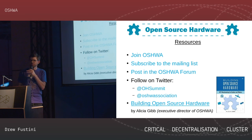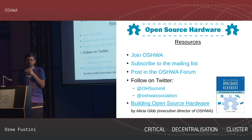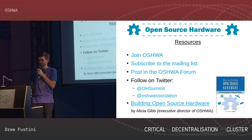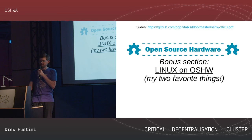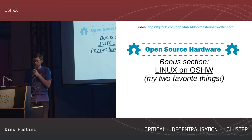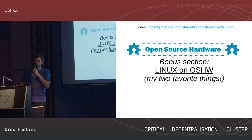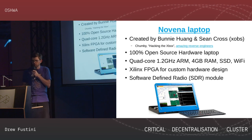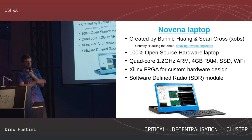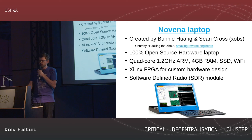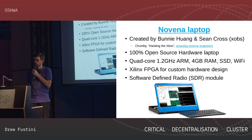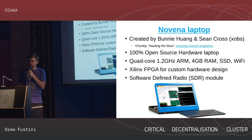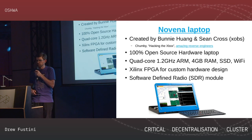My two favorite things are open source hardware and Linux, so I thought I would throw in a few projects. Because we're talking about open hardware, we should actually talk about some hardware. One of my favorite projects is called the Novena laptop, which was created by Bunny — who gave a keynote this morning — and Sean Cross, who goes by Xobs. They wanted to create a laptop that was 100% open source. They basically built the most open system they could and shared all the design files for the board, schematic, and everything.